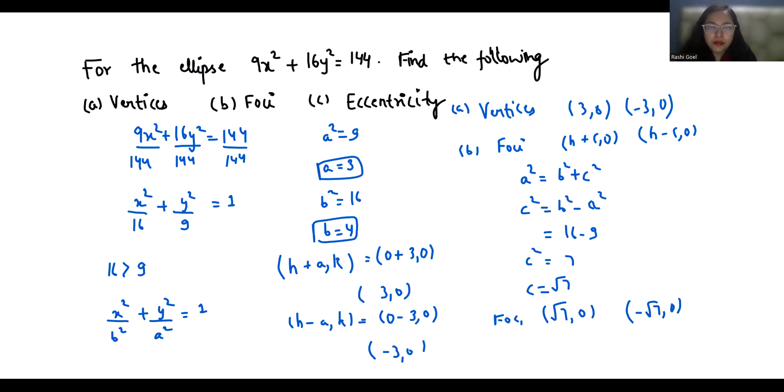Now, the eccentricity of this ellipse is c/a, which is √7/3.